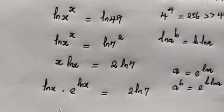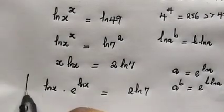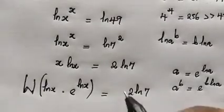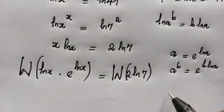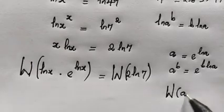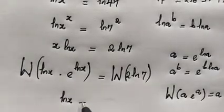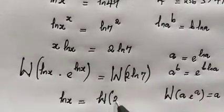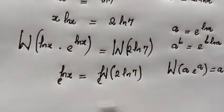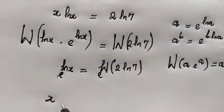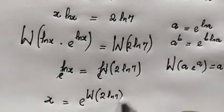Now we apply the Lambert W function — also known as the product log — to both sides. Using the key property W(a·e^a) = a, the left-hand side simplifies to ln(x). Taking the common base on both sides, the ln and e cancel, leaving x = e^(W(2·ln 7)).